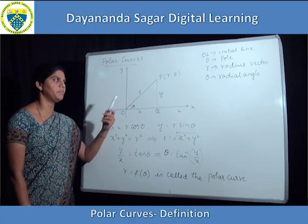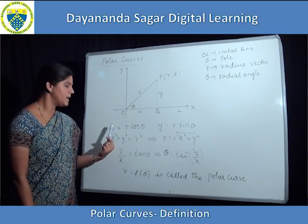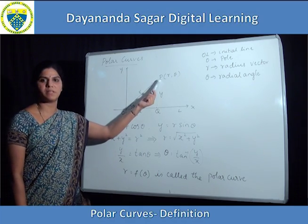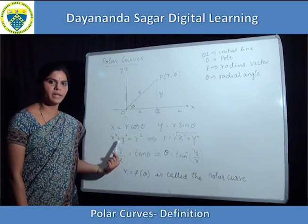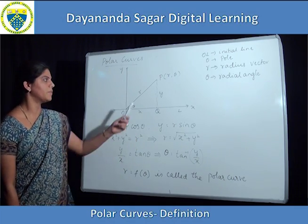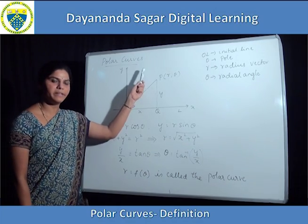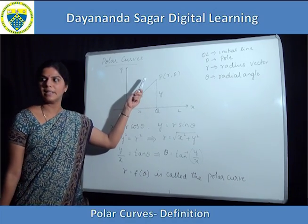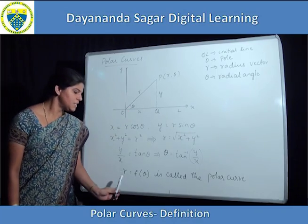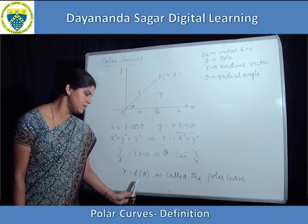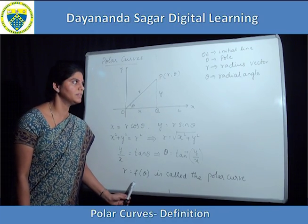This is the relationship between the polar coordinates and the Cartesian coordinates x, y. The point P can be represented by the polar coordinates R, theta or the Cartesian coordinates x, y. If this point P moves or varies, then it traces a curve which is called as the polar curve. R is equal to F of theta is called the polar curve, that is, it is the equation of the polar curve.